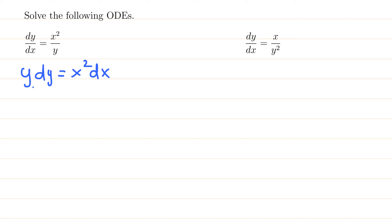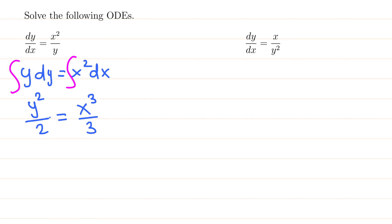Integrating y dy using the power rule — y to the 1, so this becomes y squared over 2 — equals x squared, which is x to the 2 plus 1, so x cubed over 3. We got two constants but we can combine them and just write one constant c.